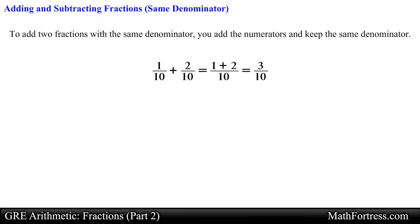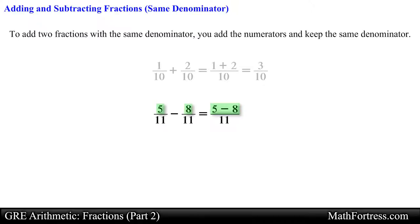The same method applies when you are subtracting fractions. For example, five over eleven minus eight over eleven is equal to five minus eight over eleven. Simplifying the numerator results in the final answer equal to negative three over eleven.